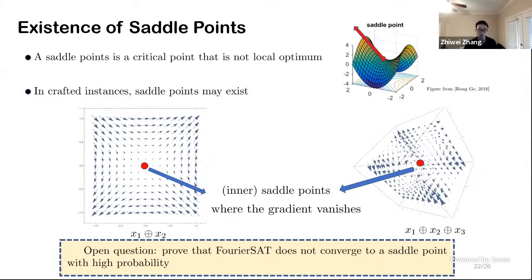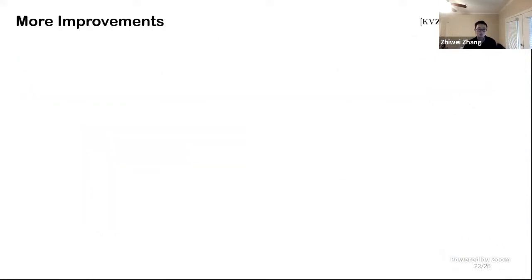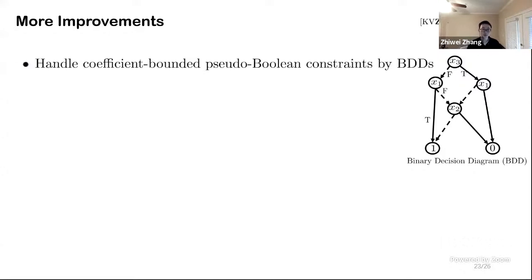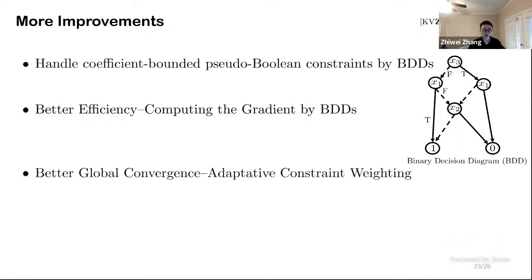Till here, I think the framework has been introduced. In this slide, I want to tell you some improvement that we made on this framework in our newest paper, where we use a new representation of Boolean constraints called binary decision diagram. We use BDD to handle coefficient bounded pseudo-Boolean constraints.